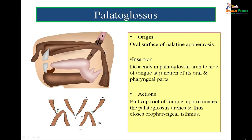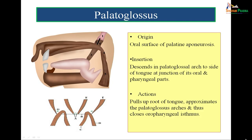The palatoglossus muscle arises from the oral surface of the palatine aponeurosis and descends in the palatoglossal arch to the side of the tongue at the junction of its oral and pharyngeal parts. Since it forms the anterior boundary of the tonsillar fossa, when it contracts on each side it shortens and closes the oropharyngeal isthmus. The nasopharyngeal isthmus is closed by the levator veli palatini, while the oropharyngeal isthmus is closed by the palatoglossus muscle.